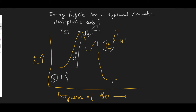The electrophile has exactly formed a bond with benzene, and H-positive has started leaving. Finally, what remains here is your product, and at the product site, the required compound is formed — that is the electrophilic substituted product. So this is the energy profile diagram for aromatic electrophilic substitution reaction. It passes through two transition states: in the first transition state, a partial bond forms with the electrophile, and in the second, a partial bond forms with the proton.